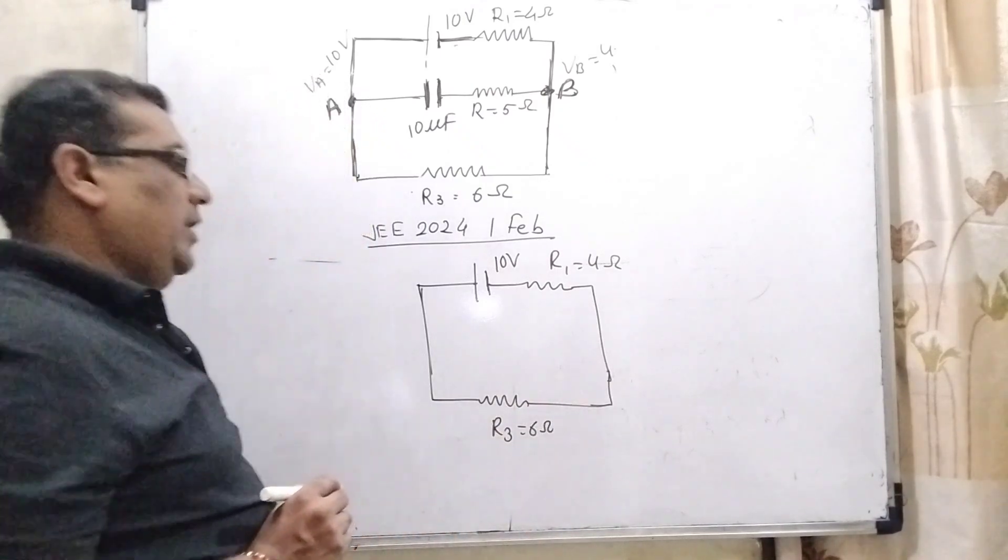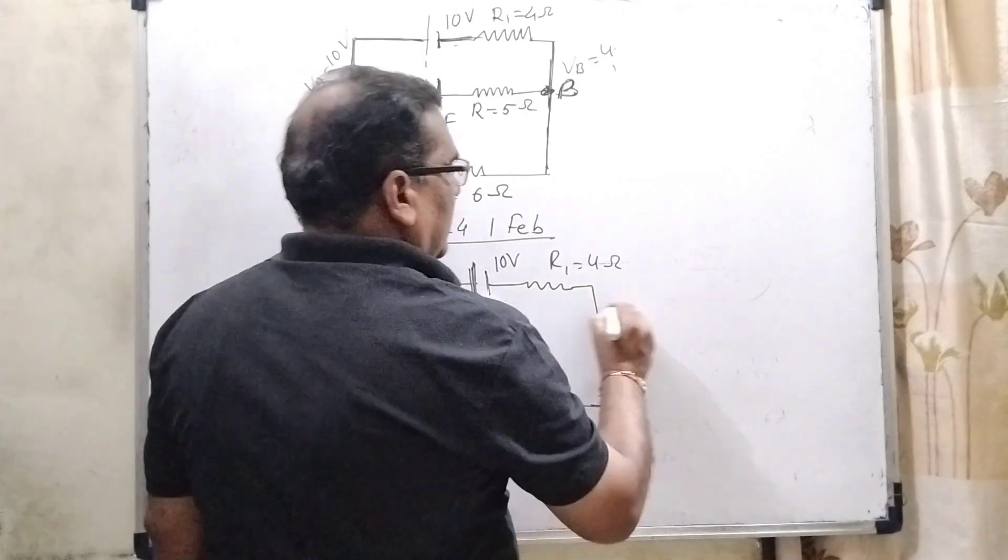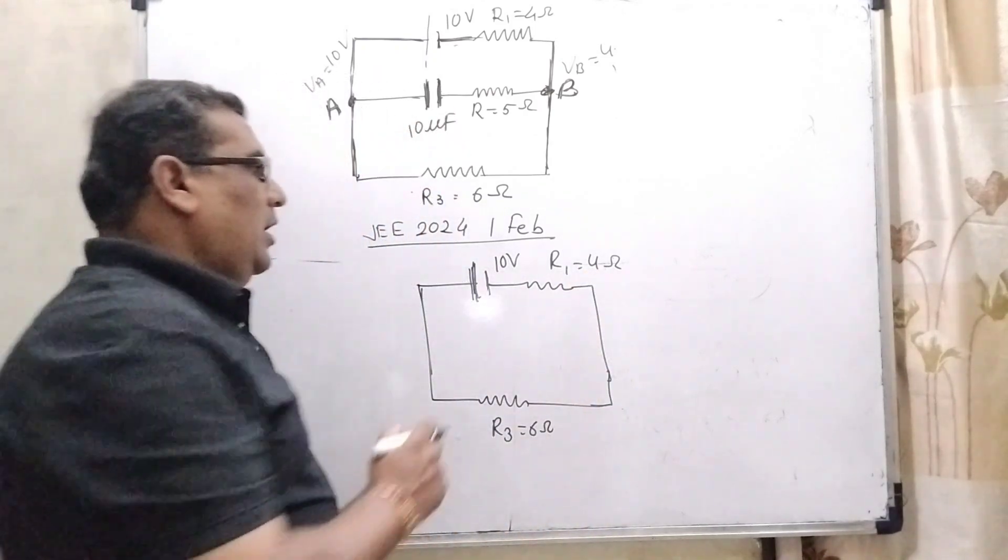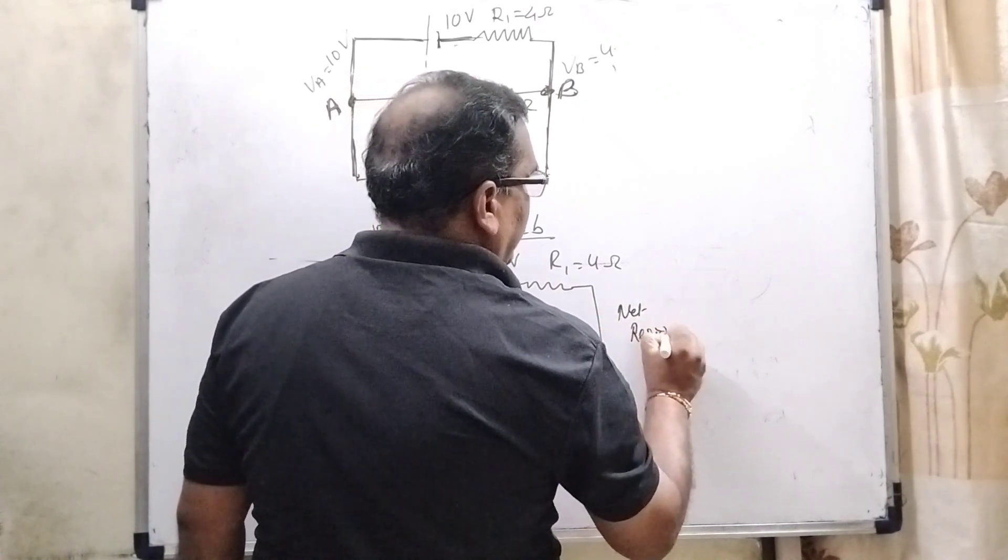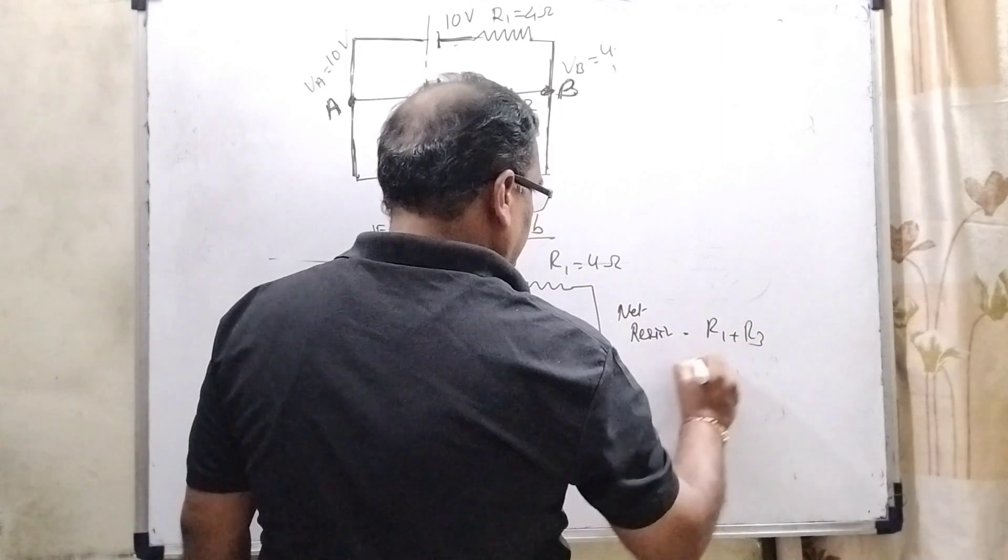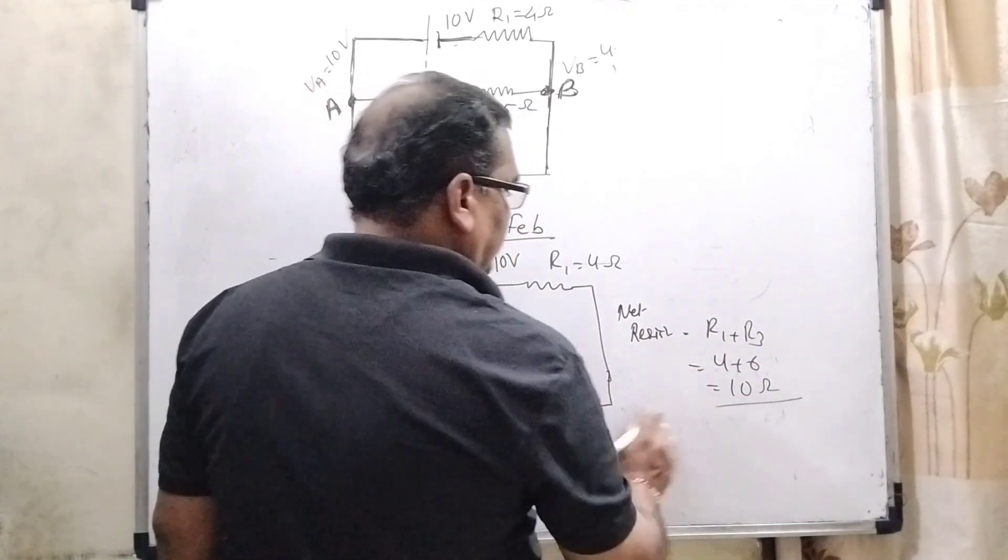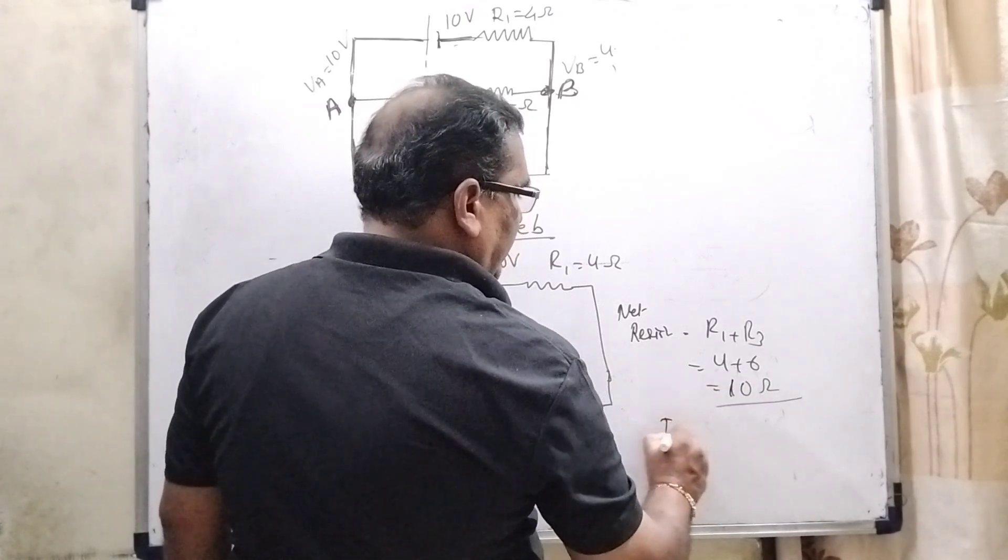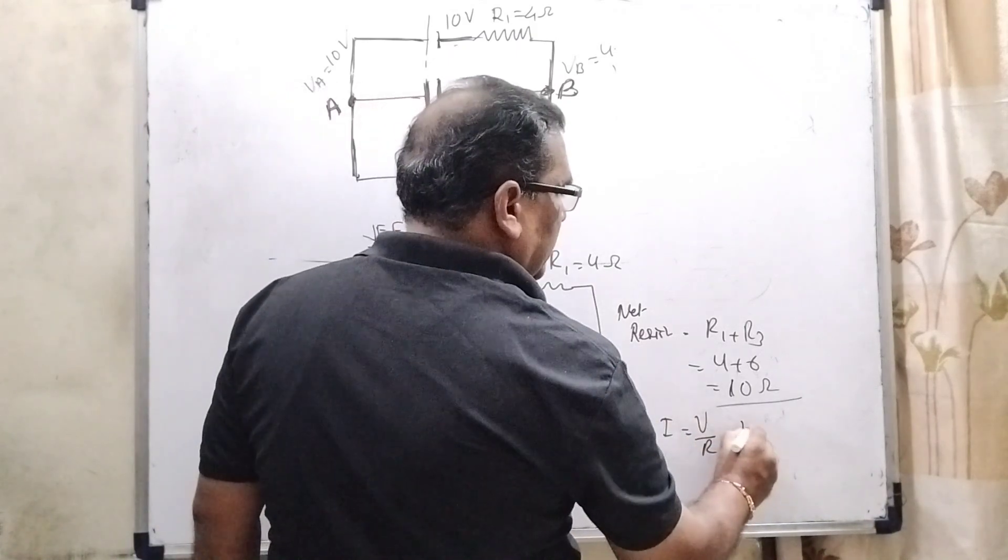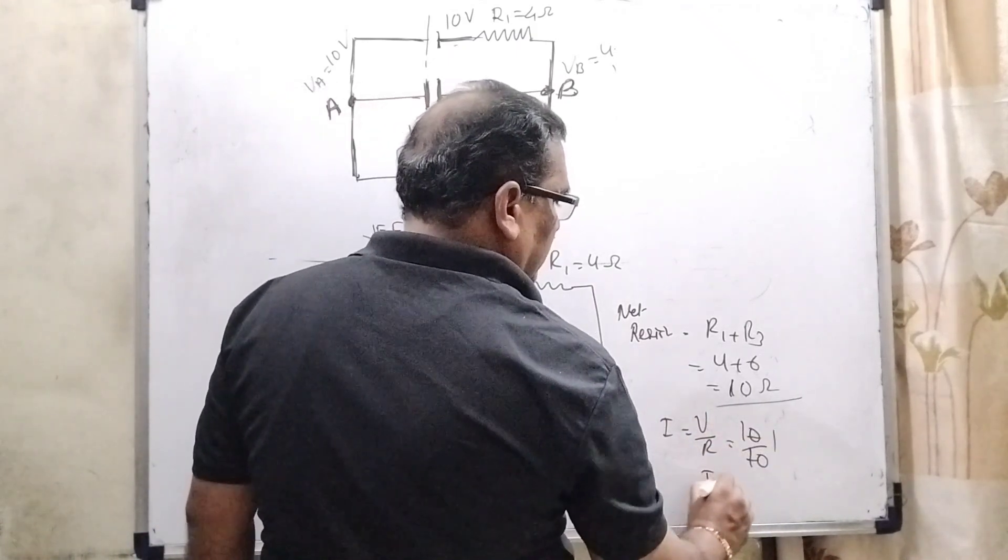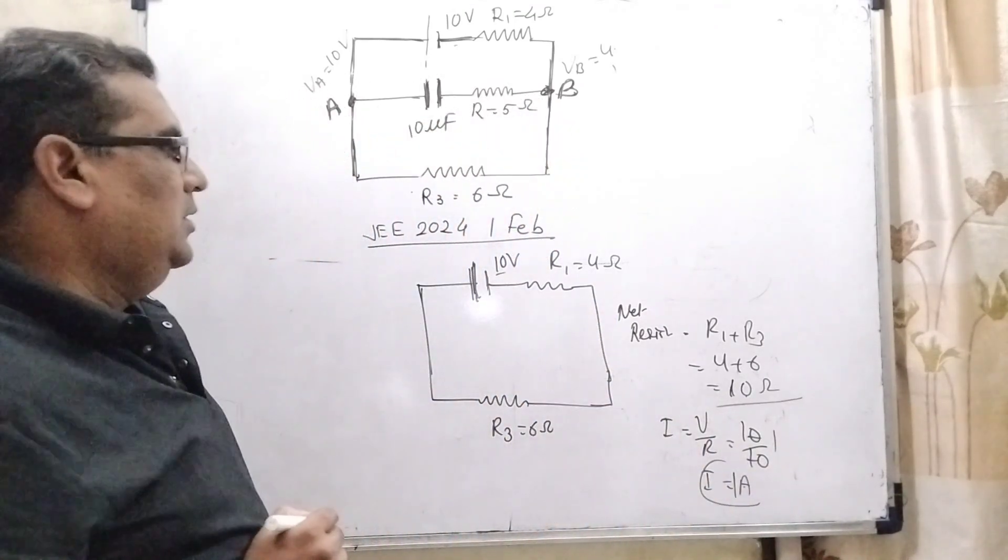And this is outer resistance that is R3 is given 6 ohm. So let us first we have to find out the amount of current will flow in this path, outer path. Here this resistance R1 and R3 are in series. So therefore, net resistance R1 and R3 that is 4 plus 6 that is 10 ohm. So here amount of current I equal to V by R. What is input potential? That is 10 volt resistance that is 10. So here the current is 1 ampere flow in this outer path.